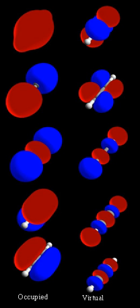In chemistry, a molecular orbital is a mathematical function describing the wave-like behavior of an electron in a molecule. This function can be used to calculate chemical and physical properties such as the probability of finding an electron in any specific region.